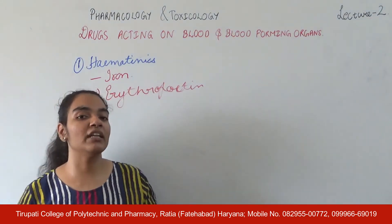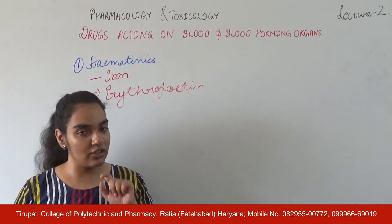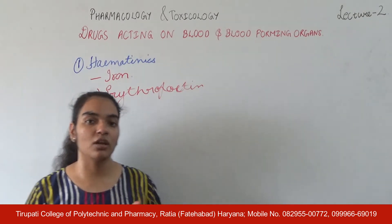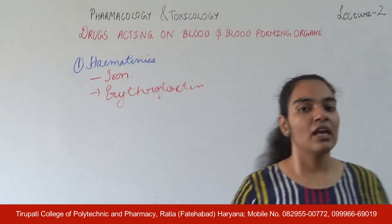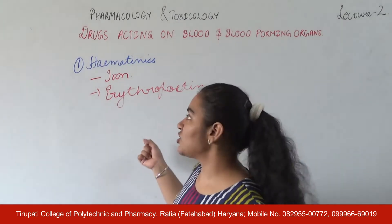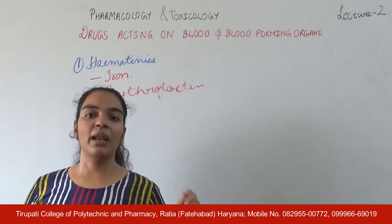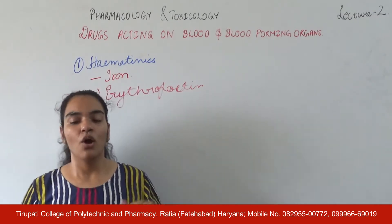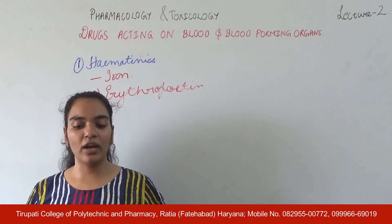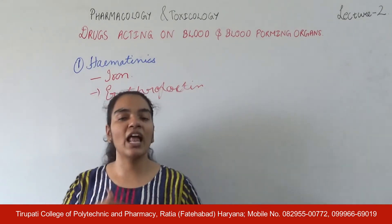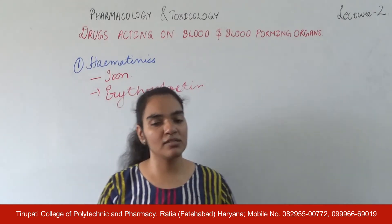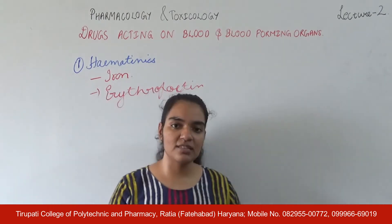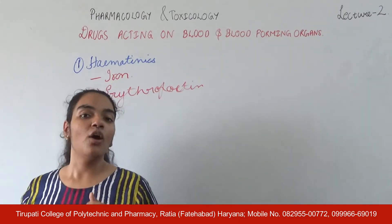Erythropoietin is one of the most important regulators of blood cell proliferation and erythropoiesis. It regulates the proliferation and differentiation process in bone marrow, and also stimulates erythropoietin and hemoglobin synthesis.